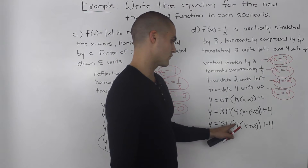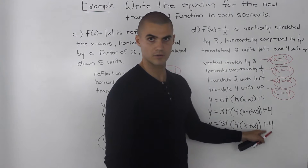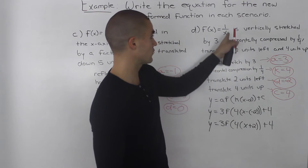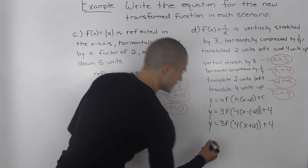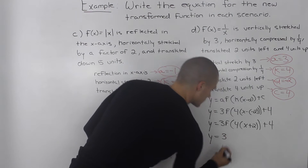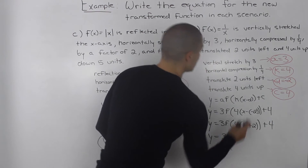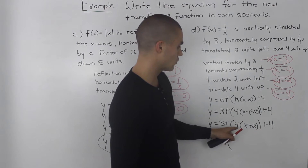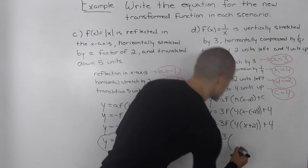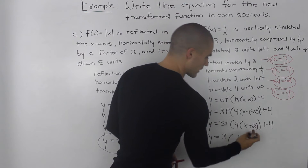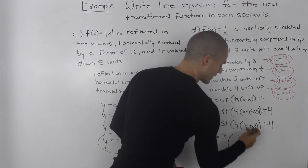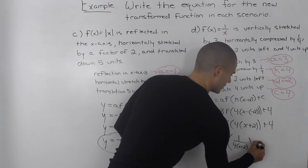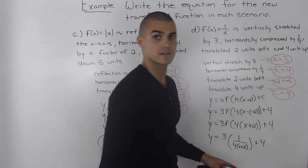So y equals 3 f of 4 times the quantity x plus 2, plus 4. This is just a general transformation that could be applied to any parent function. In this scenario, we apply it to 1 over x. We keep the 3 on the outside, and since f of x equals 1 over x, f of the whole bracket means we plug x plus 2 in for x, giving us 1 over the quantity 4 times x plus 2. The c value of plus 4 stays on the outside.